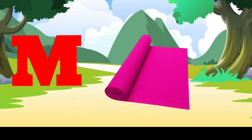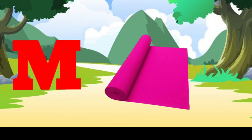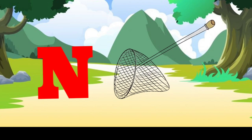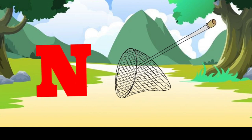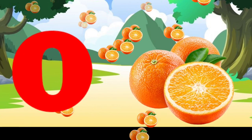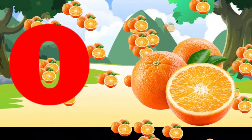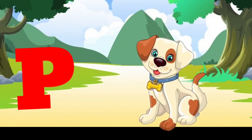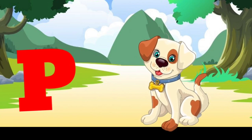M is for mat, m-m-mat. N is for net, n-n-net. O is for orange, o-o-orange. P is for pet, p-p-pet.